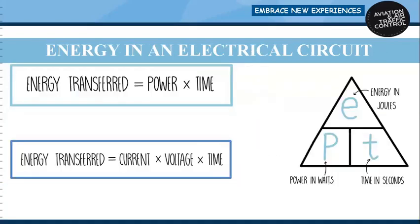Energy in an electrical circuit: energy transfer equals power multiplied by time, and since power equals current times voltage, we have two formulas for energy transfer. Using the energy triangle, with energy on top and power and time on the bottom, we can find any unknown variable when the other two are known.